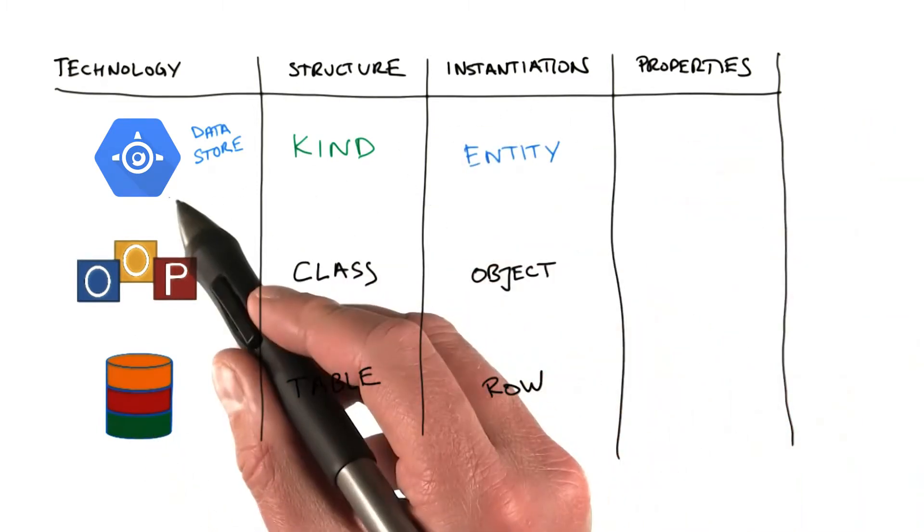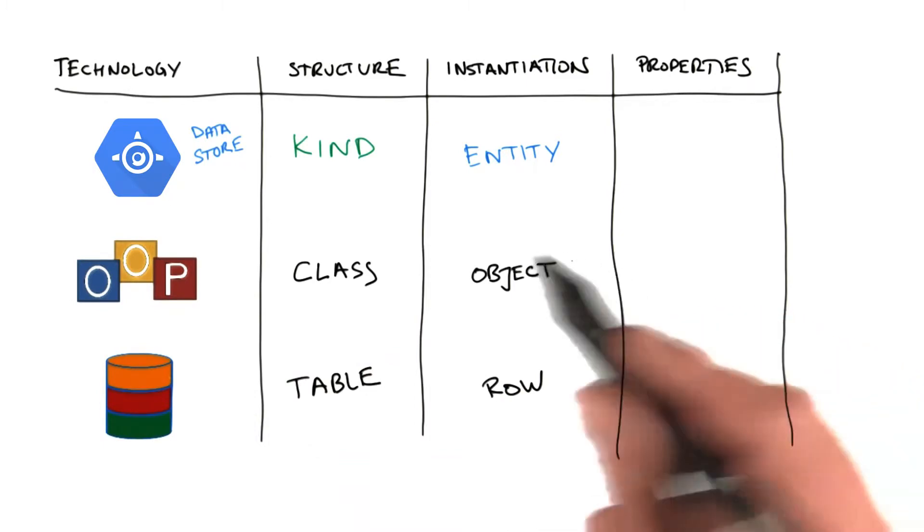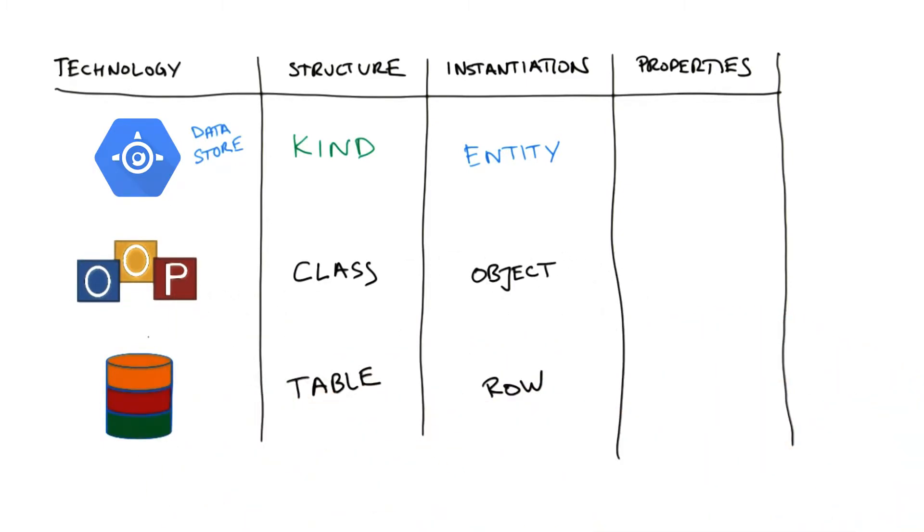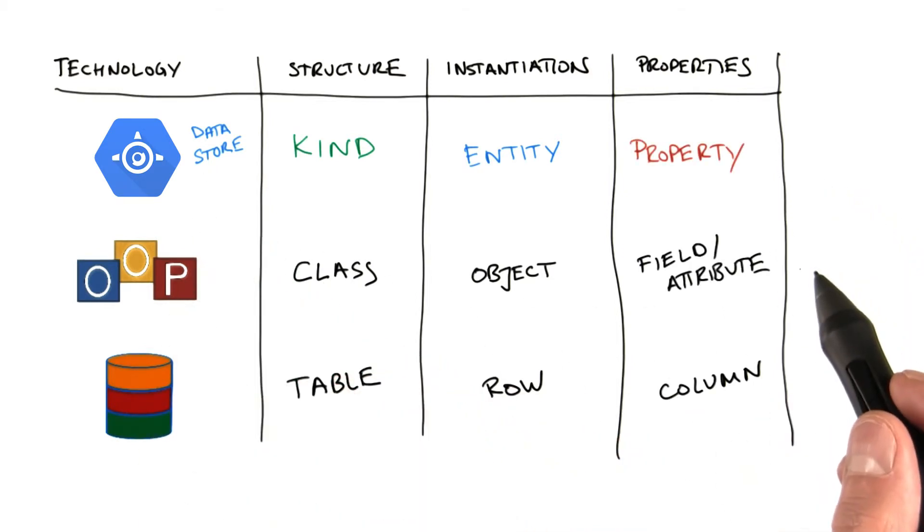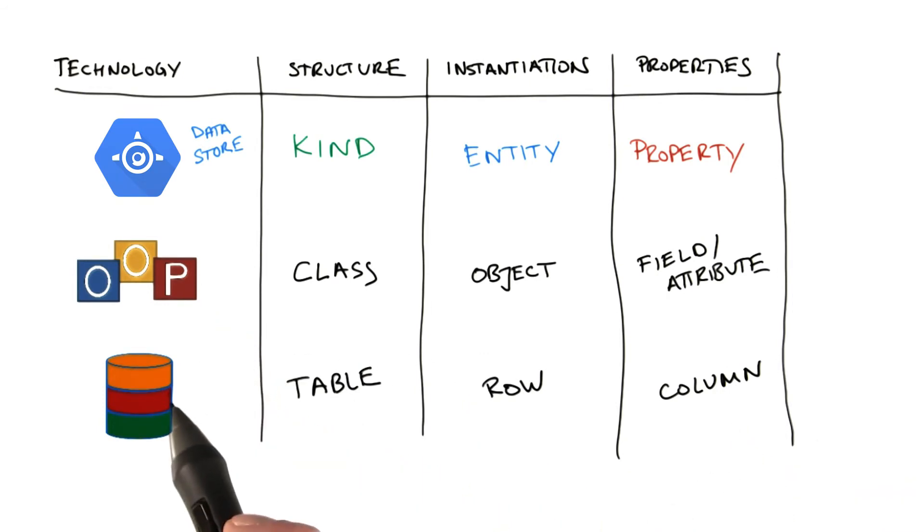And an entity in App Engine Data Store can be thought of as an object in object oriented programming, or as a row in relational database modeling. And finally, a property in Data Store can be thought of as a field or attribute in object oriented programming and as a column in relational database modeling.